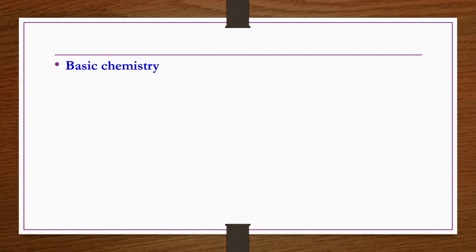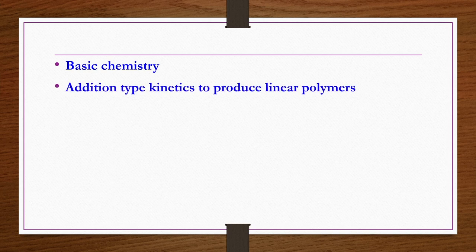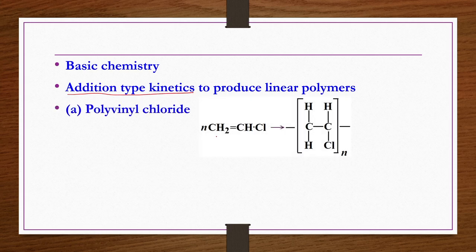For the basic chemistry, we produce a linear polymer using vinyl chloride monomer. This is based on addition-type kinetics, where n moles of vinyl chloride monomer undergo addition polymerization to produce a polymer having the repeating structure CH2-CHCl repeated n times. The value of n determines the final molecular weight and other important associated properties of the polymer.